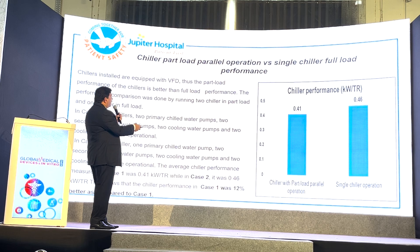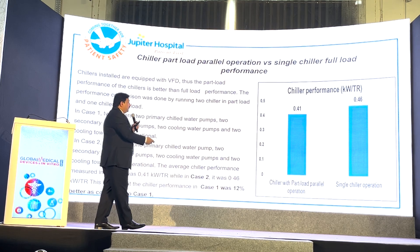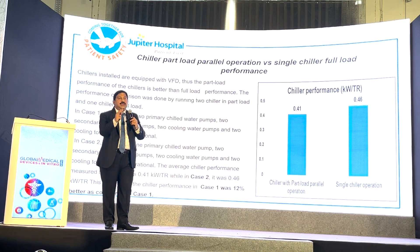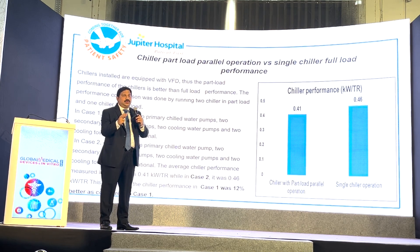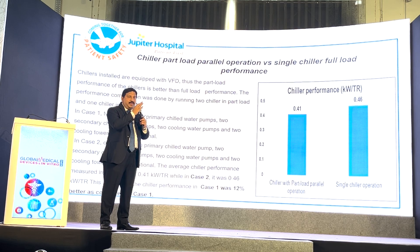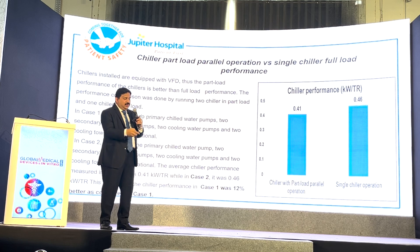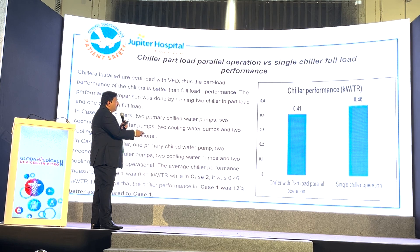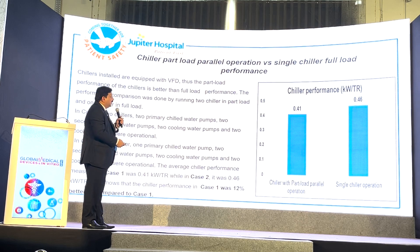These are the chiller performance results. If I am running a single chiller versus running two chillers in parallel — say 60-60% or 50-50% against 100% or 90% on one chiller — when you are running part-load parallel operations with VFD, you can see it is less consumption compared to single chiller operation.